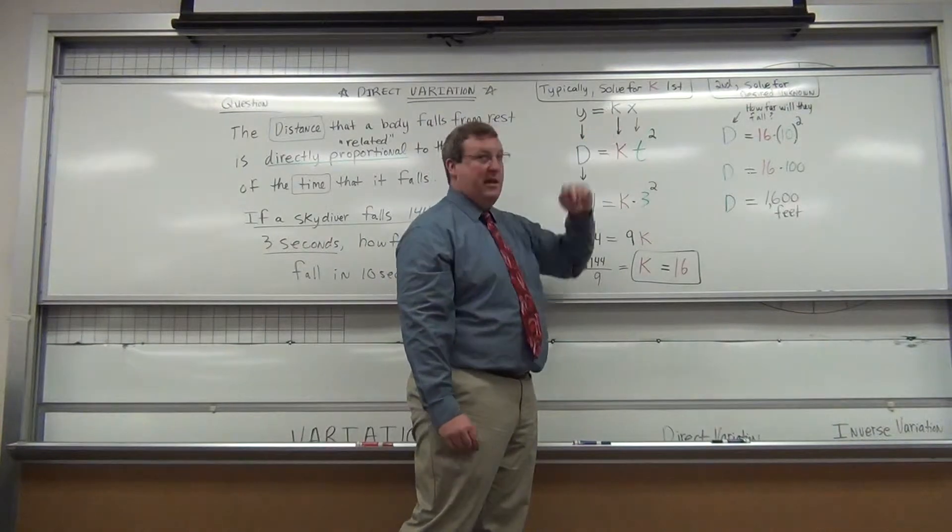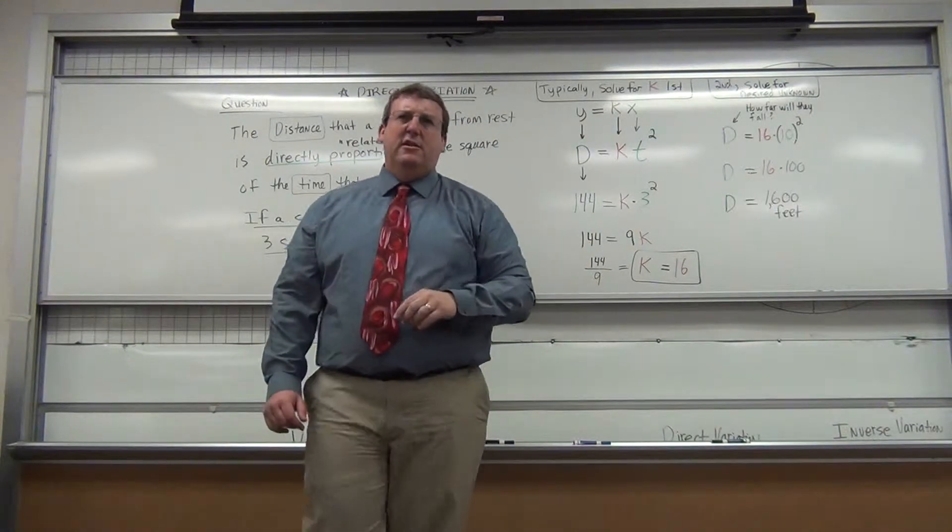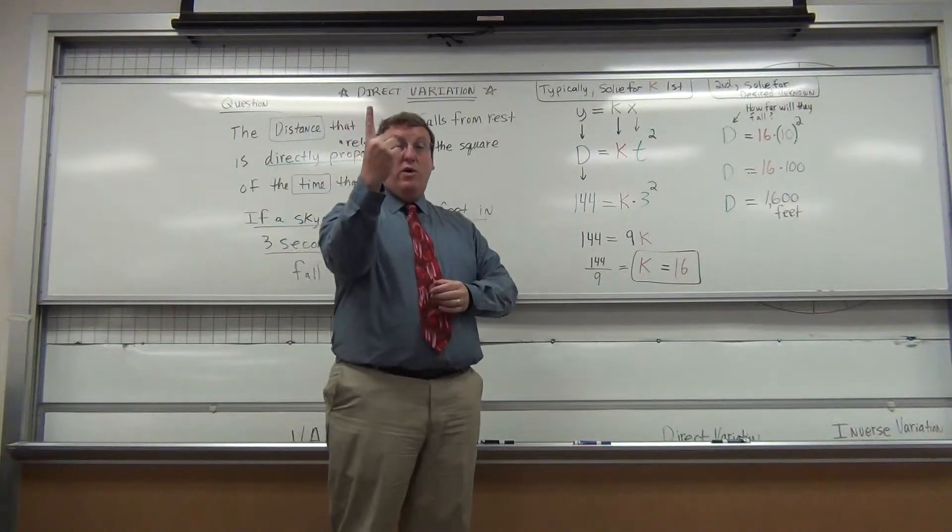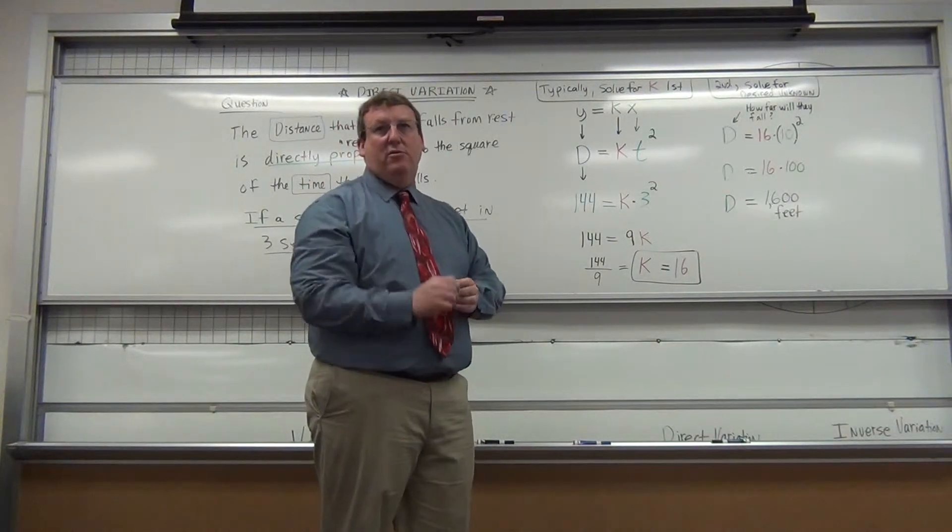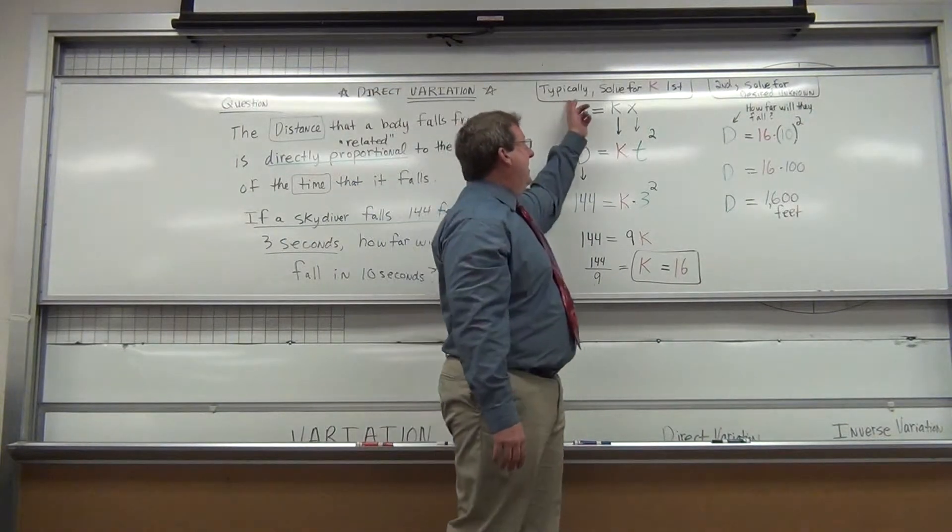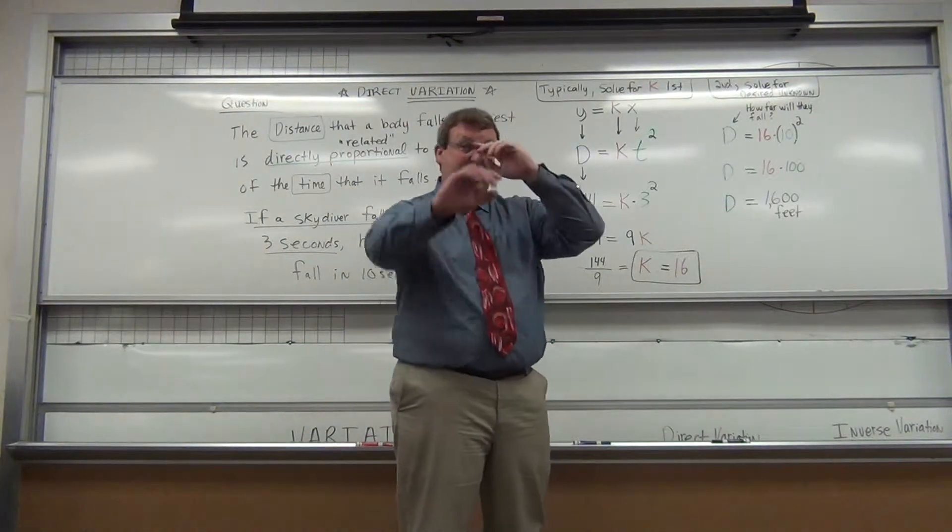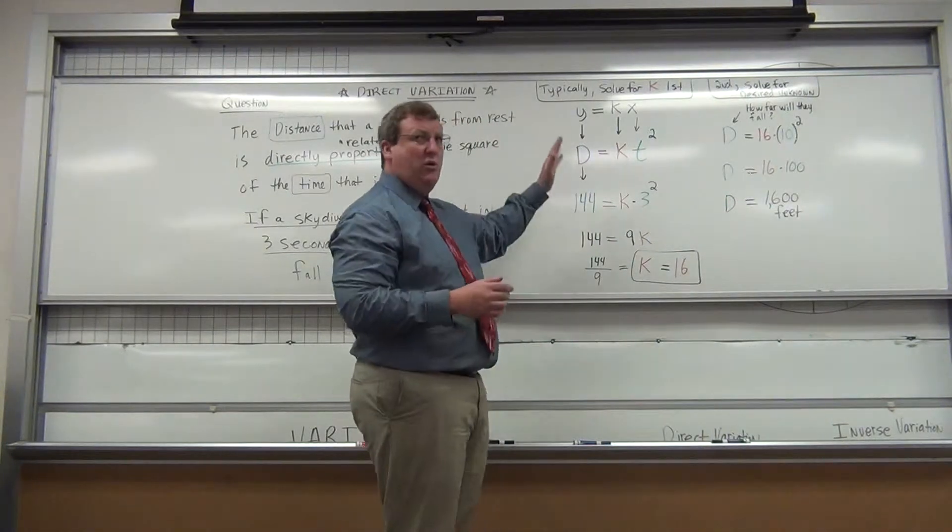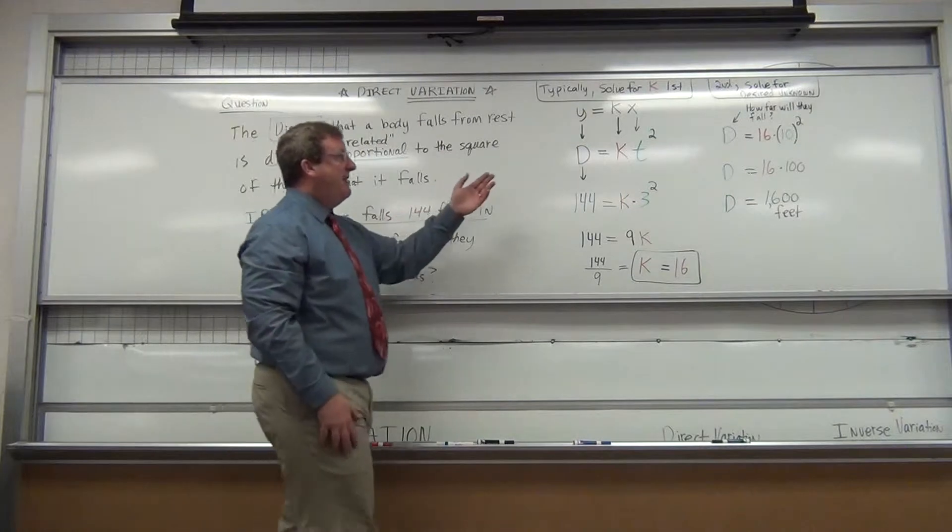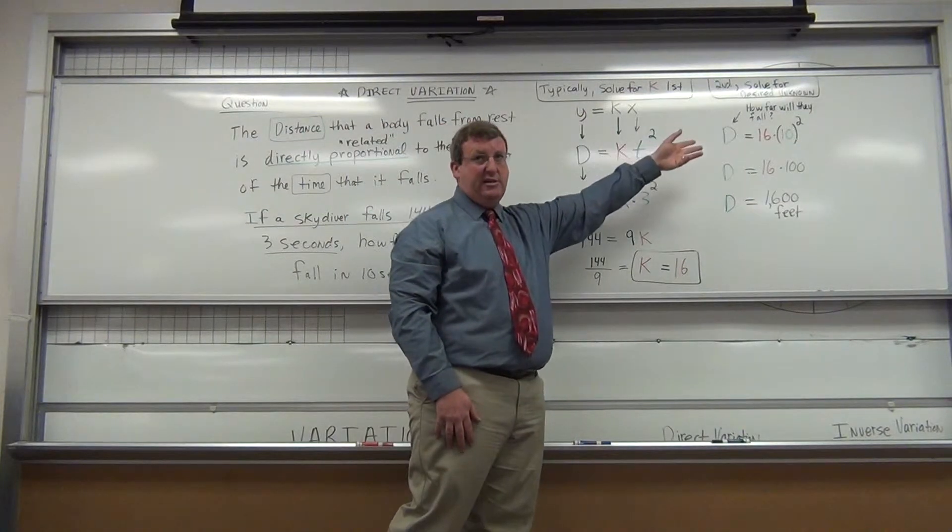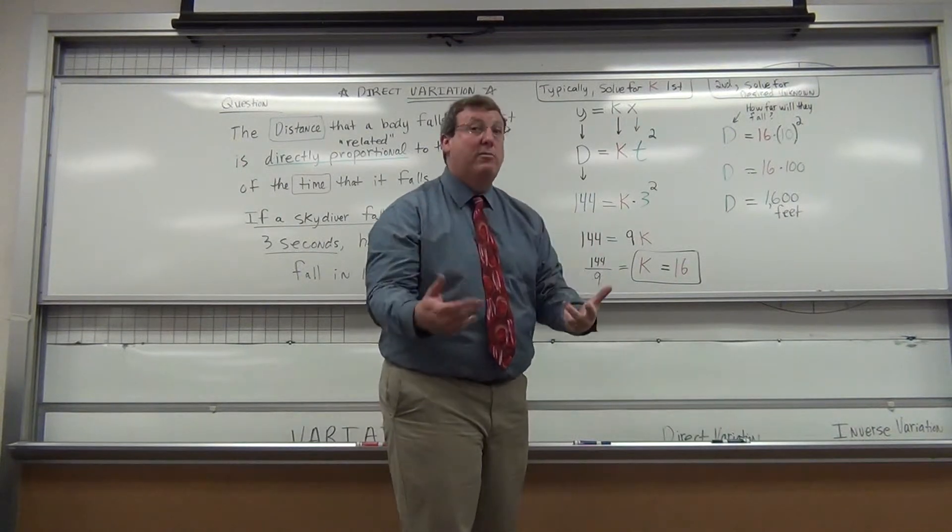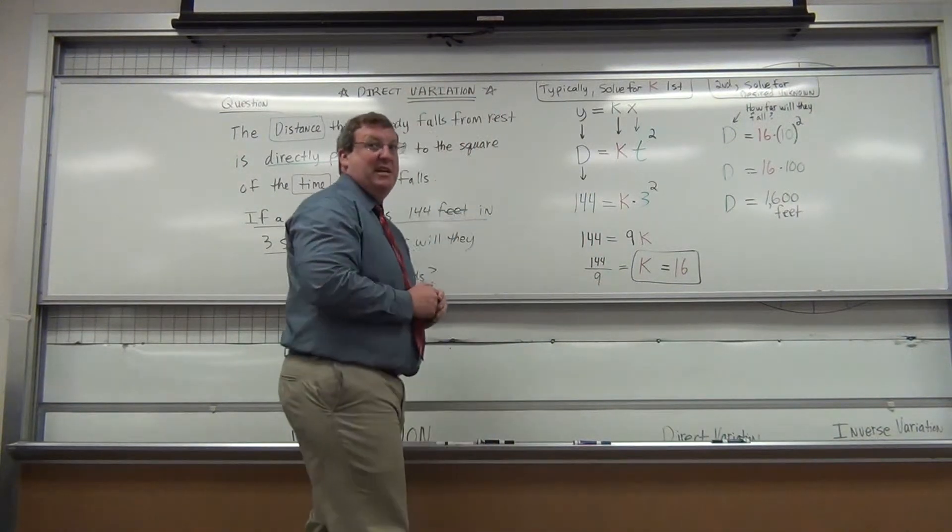Direct variation is y equals kx. I'll give you a hint. Almost every time you see a word problem like this, it's one equation and you better have one unknown. That's it. Then you can solve for that unknown. Typically, you're going to solve for k first. But let me take the words and put it in equation form.